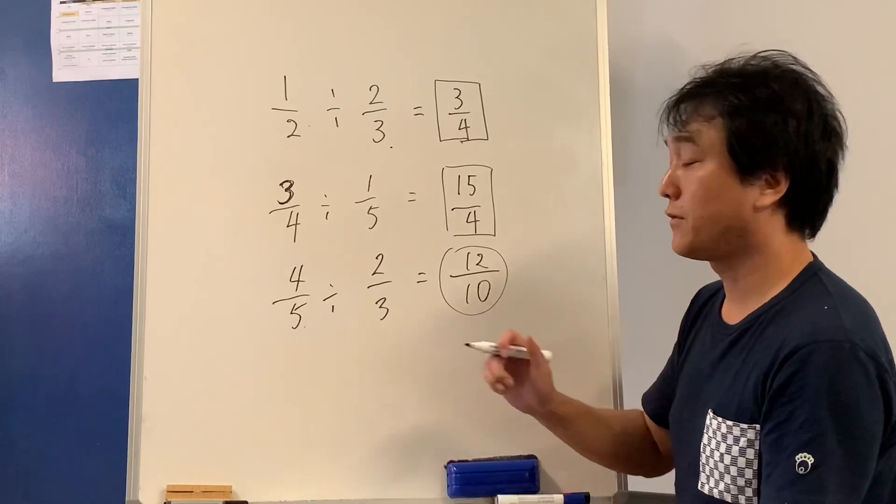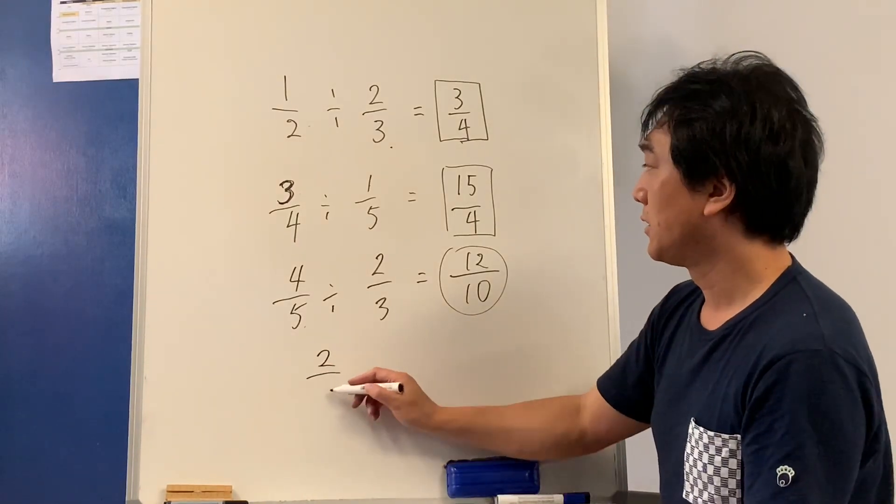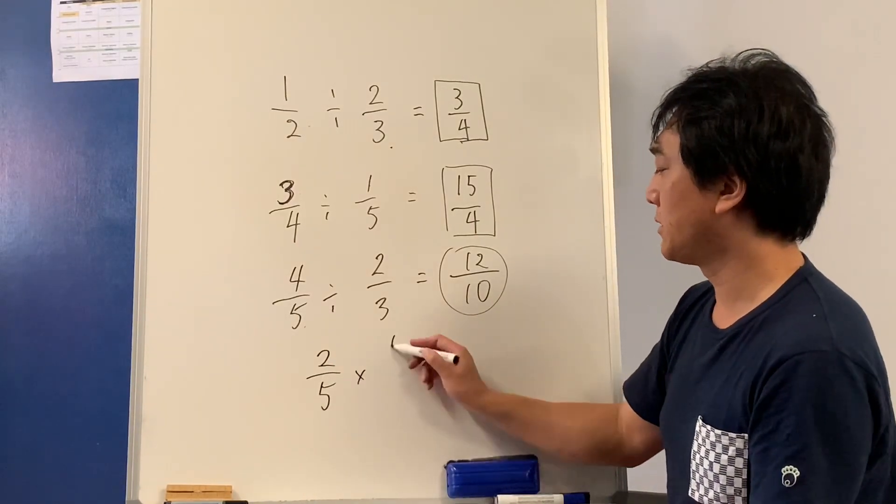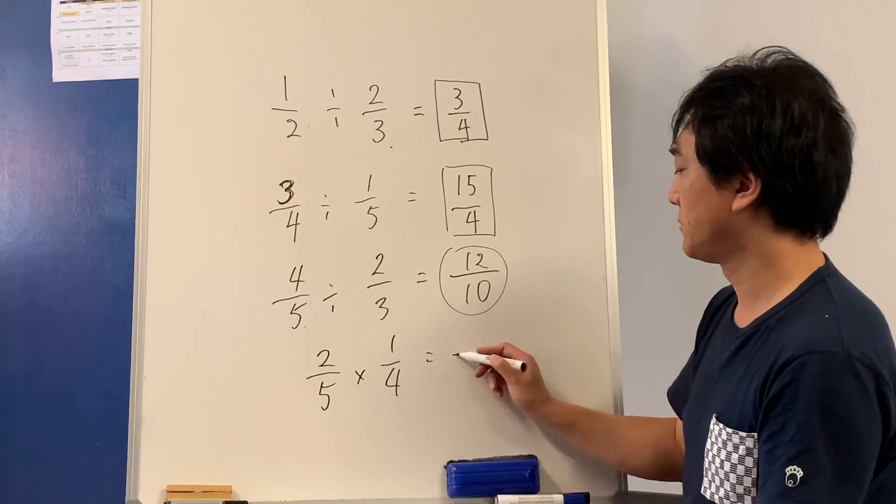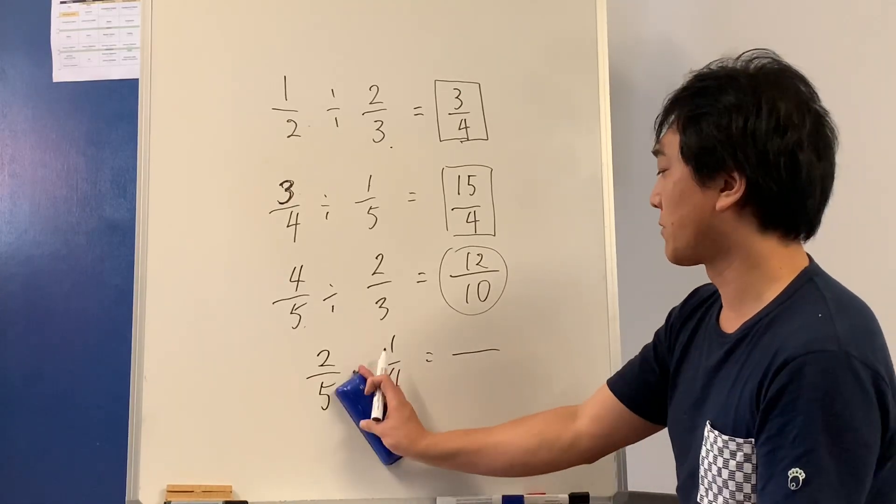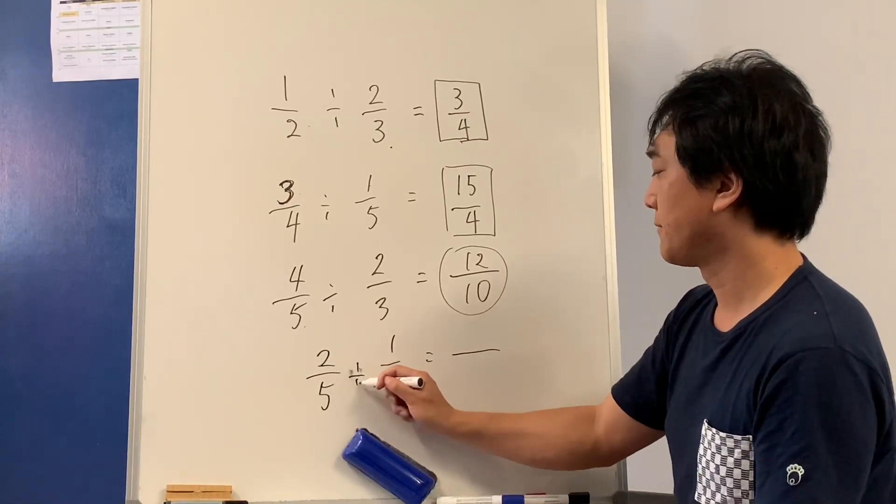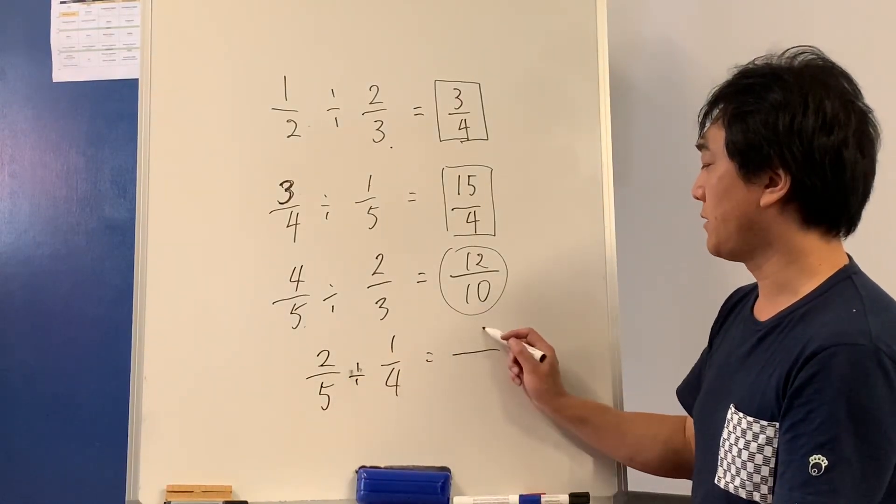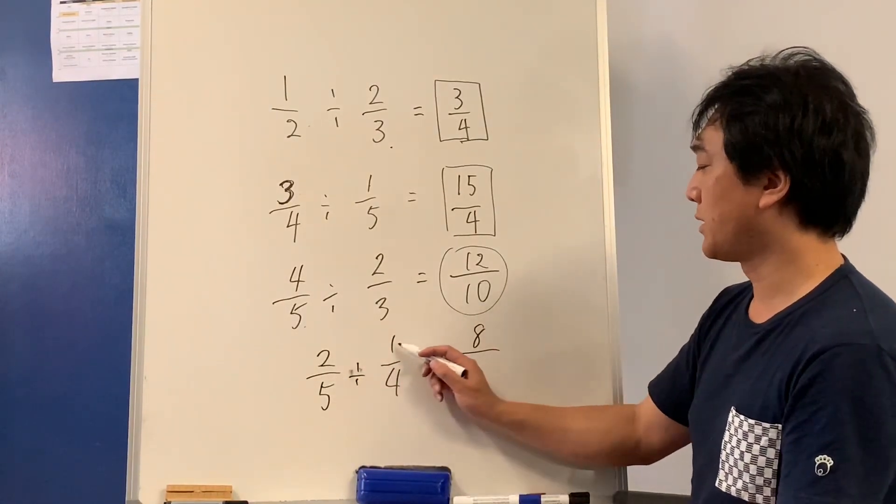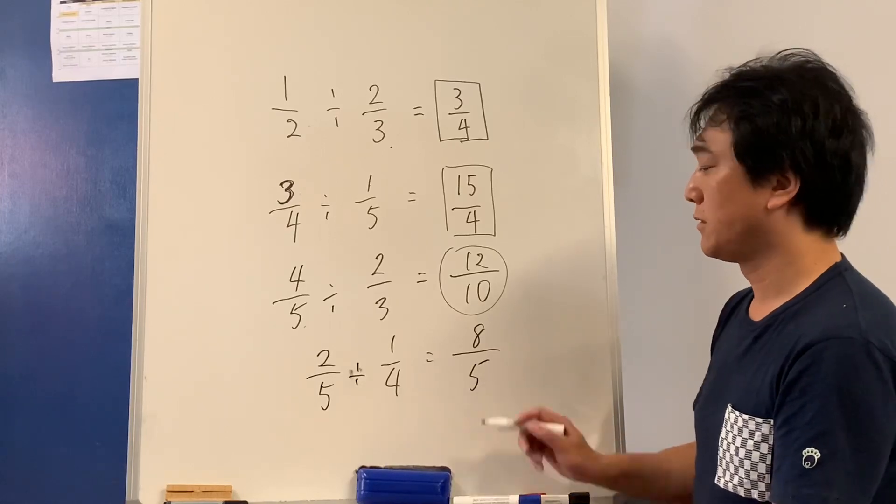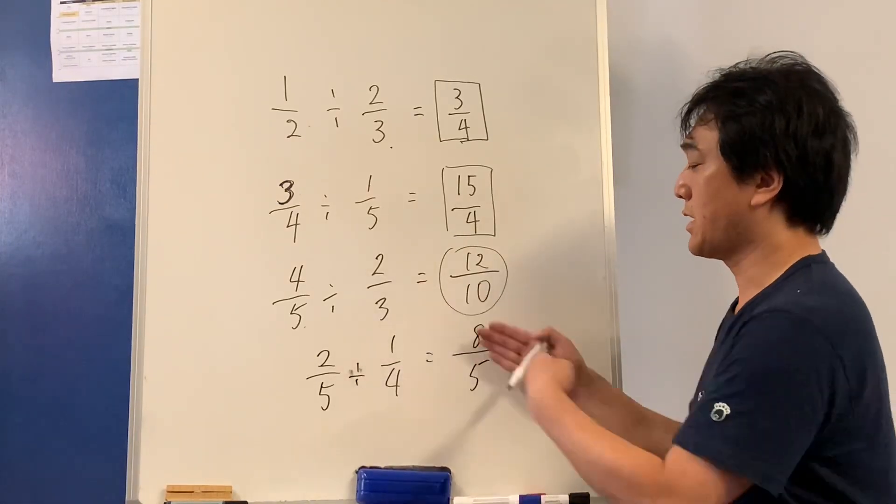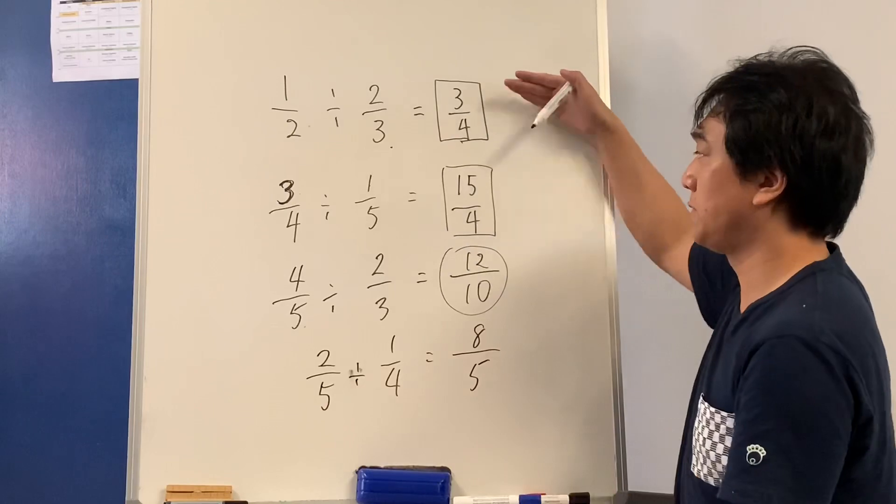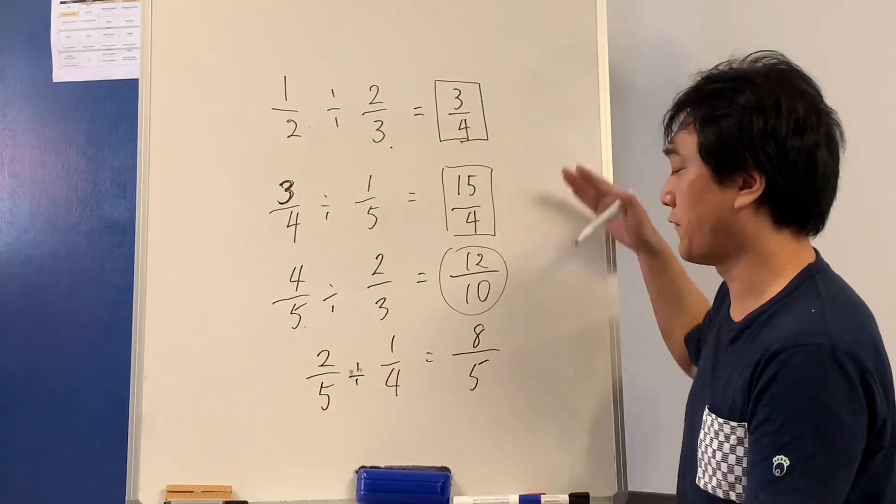I'll give you one more. Two-fifths divided by a quarter. Five times four is eight. Five times one is five. So that is how it's working, using the patterns we found.